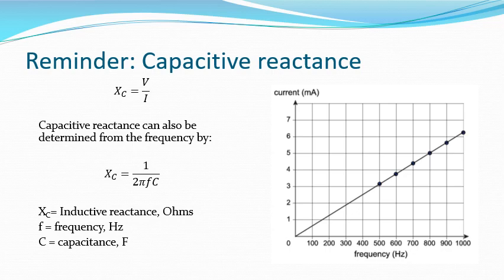A reminder about capacitive reactance: capacitive reactance is the opposition to the flow of current through a capacitor, and similarly it's measured in ohms and is the ratio of voltage to current. However, the relationship with frequency is the opposite — the higher the frequency, the less the reactance and the more the current. Many circuits contain both capacitors and inductors; while both are frequency-dependent, they act in opposing ways and can be used for different purposes.